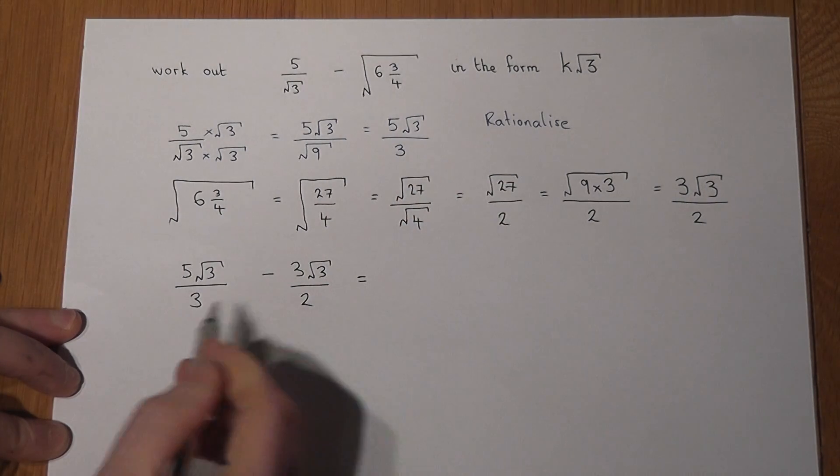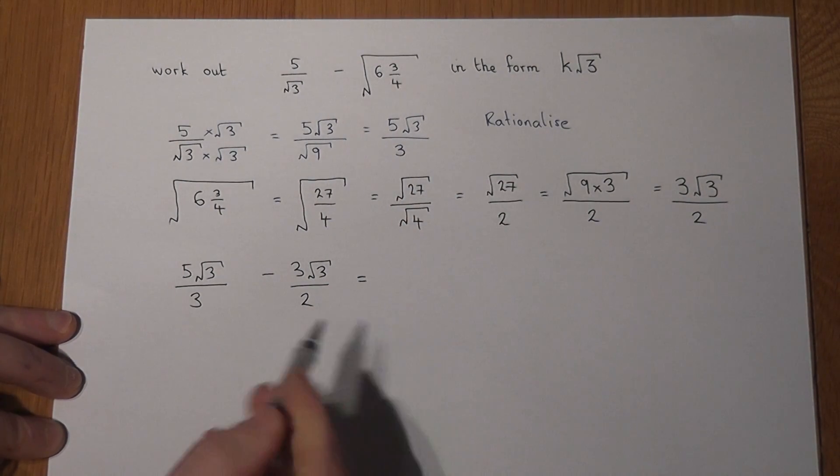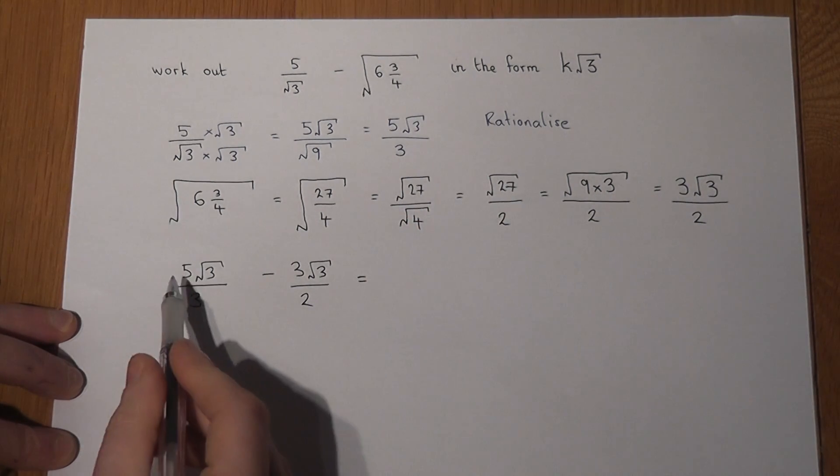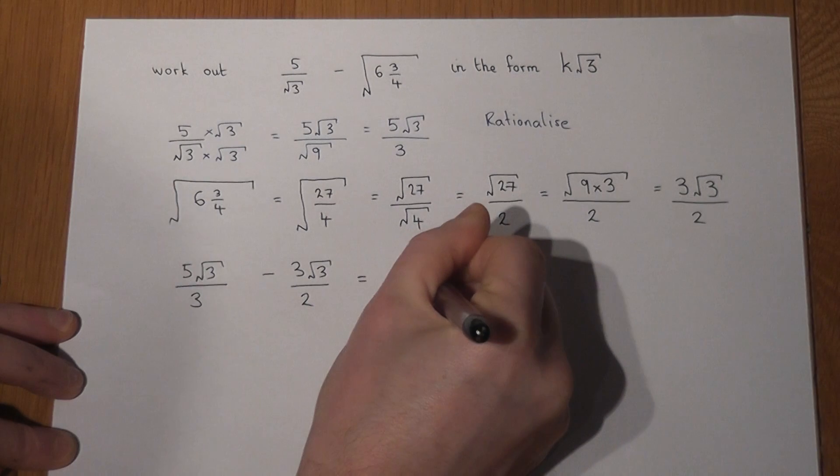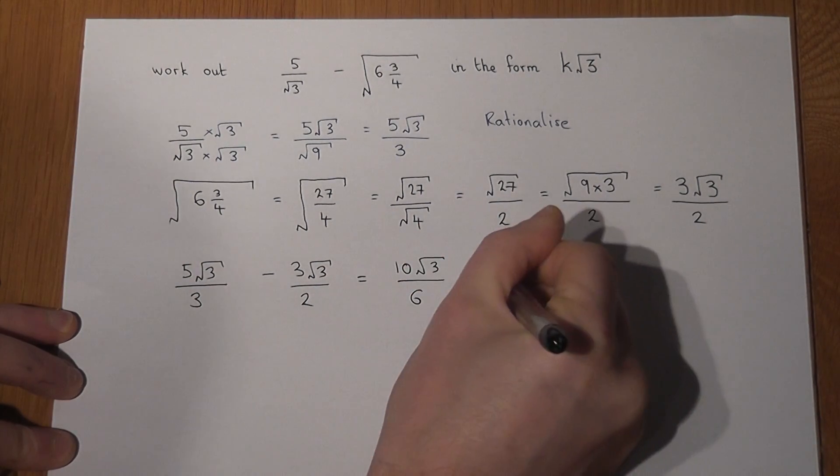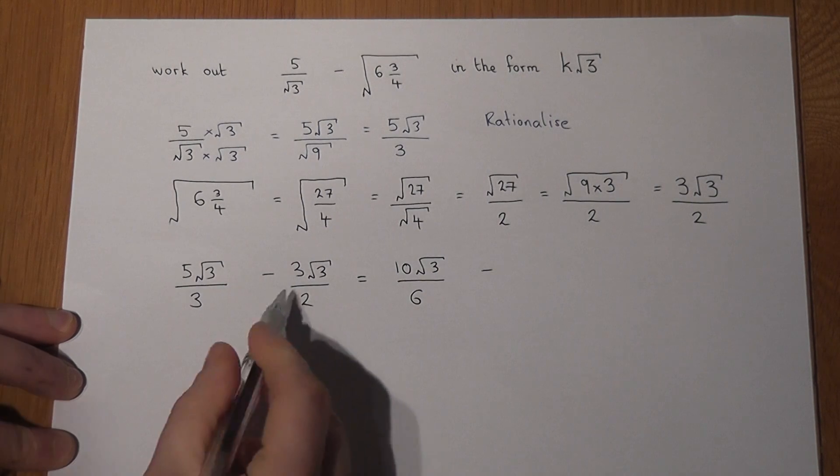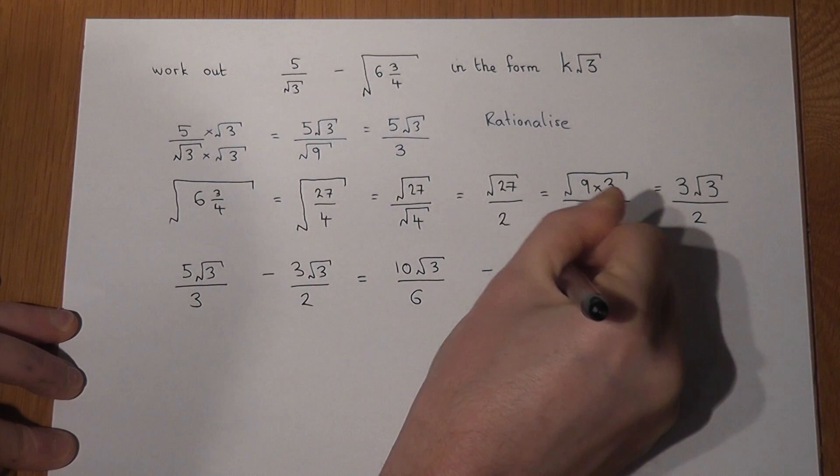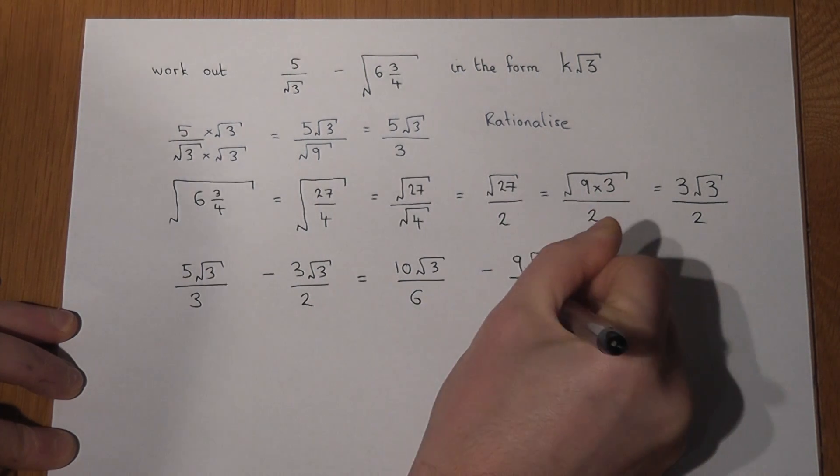Well, when we add or subtract fractions we need to have the same denominator. So if I double the top and bottom of the first fraction, 2 times 5 is 10, 2 times 3 is 6. If I triple the top and bottom of the second fraction, 3 times 3 is 9, all over 6.